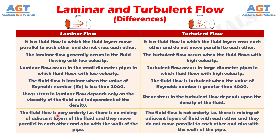Number 6. In laminar flow, the fluid flow is very orderly, that is, there is no mixing of adjacent layers of the fluid and they move parallel to each other and also with the walls of the pipe, whereas in turbulent flow, the fluid flow is not orderly, that is, there is mixing of adjacent layers of fluid with each other and they do not move parallel to each other and also with the walls of the pipe.